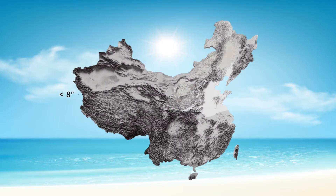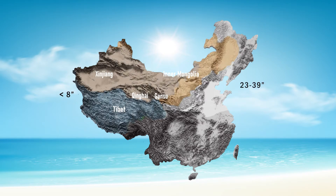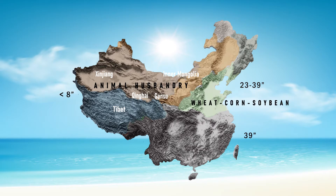China can roughly be divided into four different agro-climatic zones. The desert areas in the west include mountain ranges including Tibet and Inner Mongolia. This vast area has precipitation below 8 inches and average temperatures ranging between minus 4 and 12 degrees Celsius, dominated by grassland and used for animal husbandry. The northeastern region close to Beijing is relatively flat, with rainfall between 23 to 39 inches and average temperatures between 2 to 14 degrees Celsius, favoring wheat, corn, and soybean production.